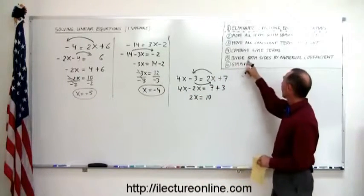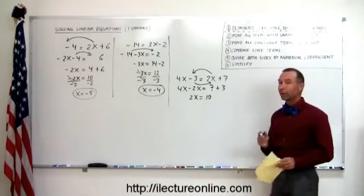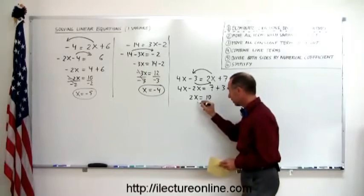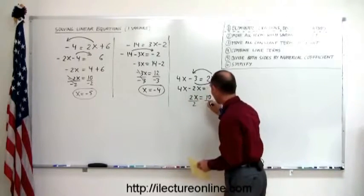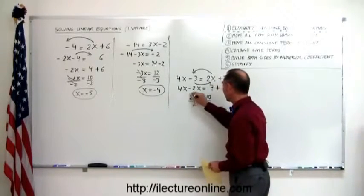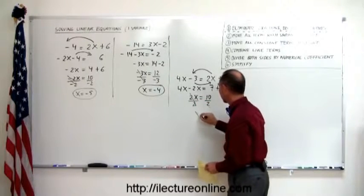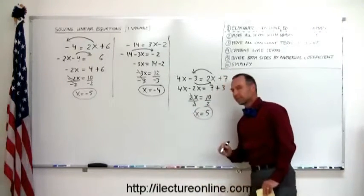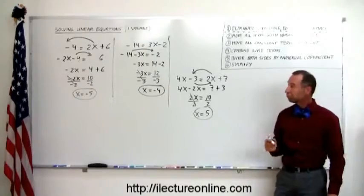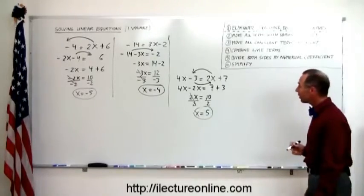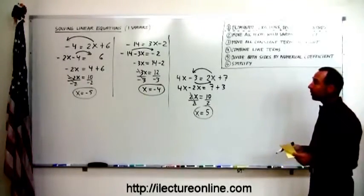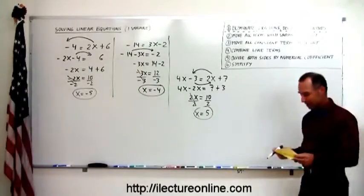The next step: divide both sides by the numerical coefficient in front of the variable. That's a 2, so divide both sides by 2. This cancels, and we have x equals 10 divided by 2, which is 5. Looks pretty straightforward — hopefully this is beginning to make sense.